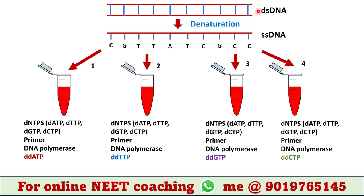Any double-stranded DNA must first be denatured to make it single-stranded. The single-stranded DNA is then divided into four tubes named 1, 2, 3, and 4. Along with the single-stranded DNA, each tube contains deoxynucleotide triphosphates (dNTPs) — dATP, dTTP, dGTP, and dCTP — as well as a primer, DNA polymerase, and dideoxynucleotide triphosphates (ddNTPs).